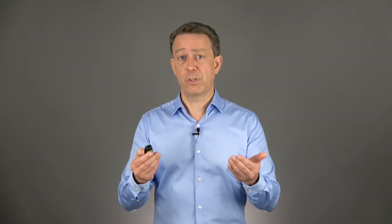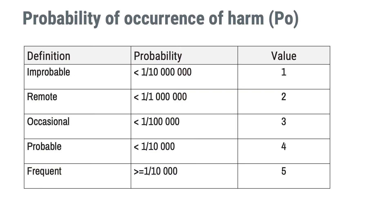Probability of occurrence of harm is about probability, and probability is usually expressed as a percentage or decimal number. In risk management, it is common practice to simplify things and translate the probability into a semi-quantitative number — for example, a range from 1 to 5, as exemplified in a table. However, it is important to remember it's all about probability, not the value. If you want to get PO from P1 and P2, you must multiply the probabilities, not the values.